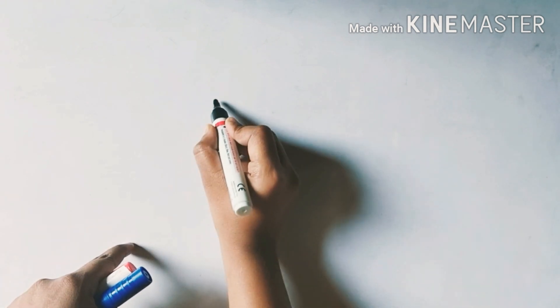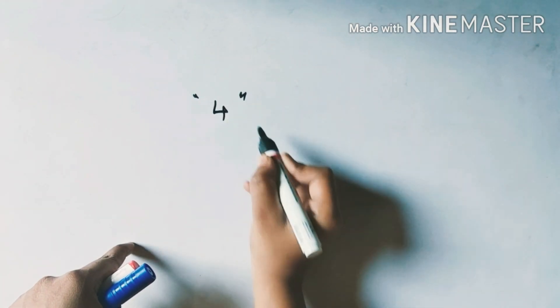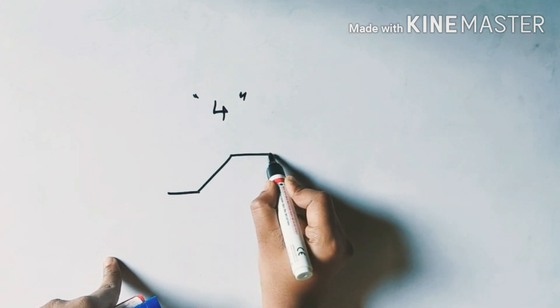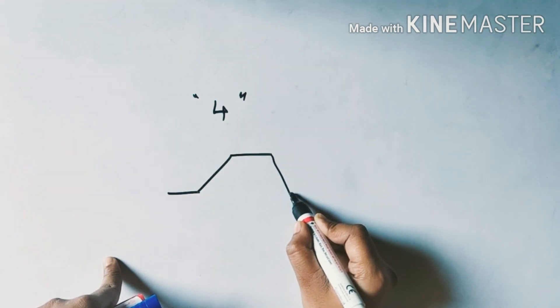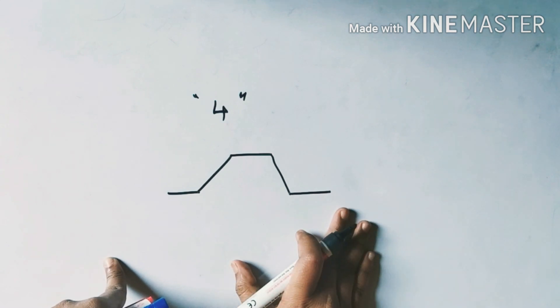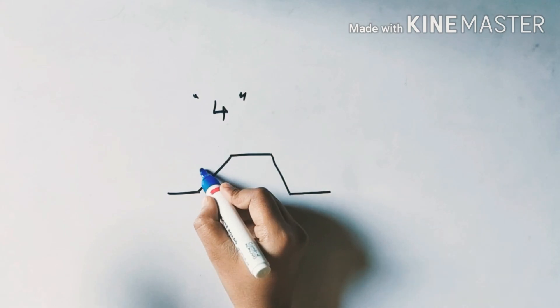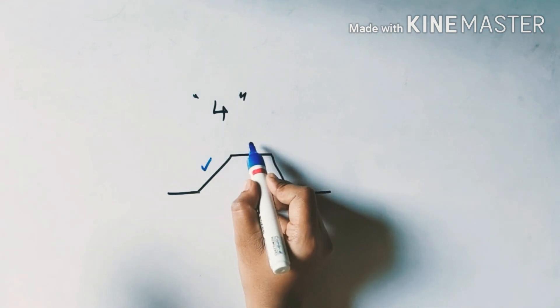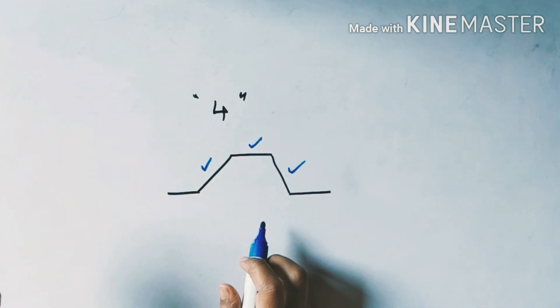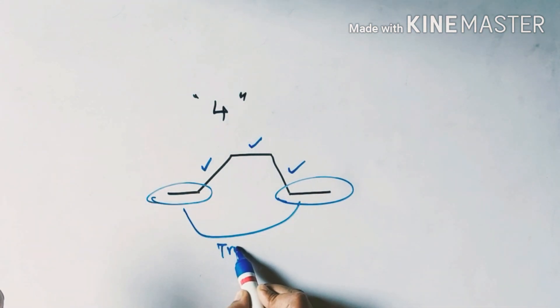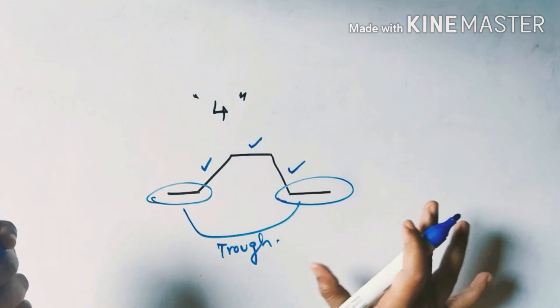We have four phases in our business cycle: trough, expansion, peak, contraction, and then again trough. We already discussed this chapter - expansion, peak, contraction.